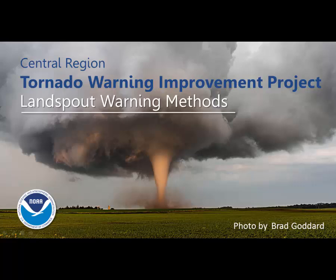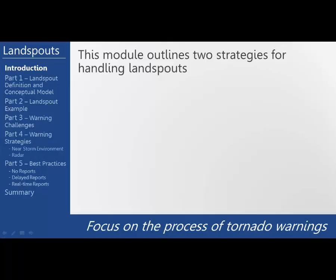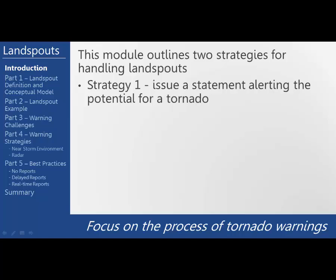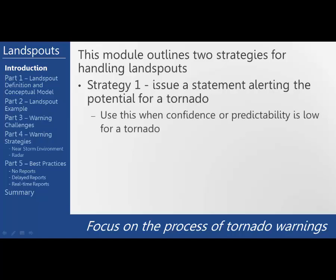Welcome to the Central Region Tornado Warning Improvement Project Module for Landspout Warning Methods. This first video will cover parts one through four of the training while the second video will cover part five. This module outlines two strategies for handling landspouts. Strategy one is to use a suite of messaging options to alert on the potential for a tornado — we use this when confidence or predictability is low for a tornado.